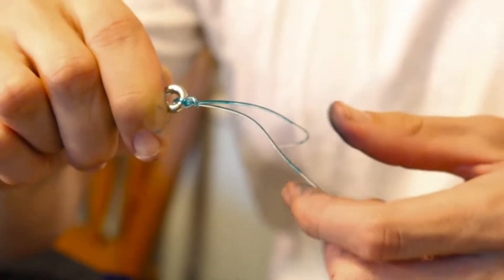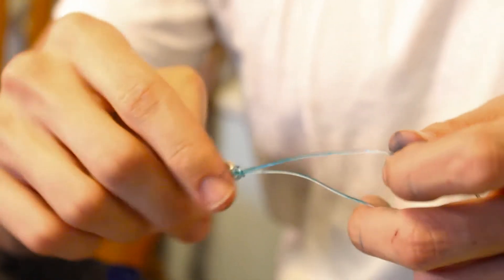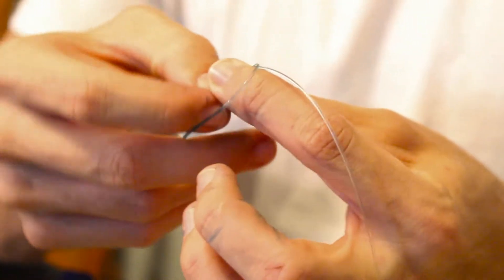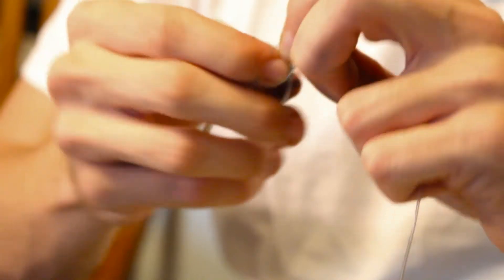Now to complete it, what I do is I take this end, this extra end. I'm going to pull it back this way and start looping it down towards the hook. That's my first loop. And you can do this three or four times.